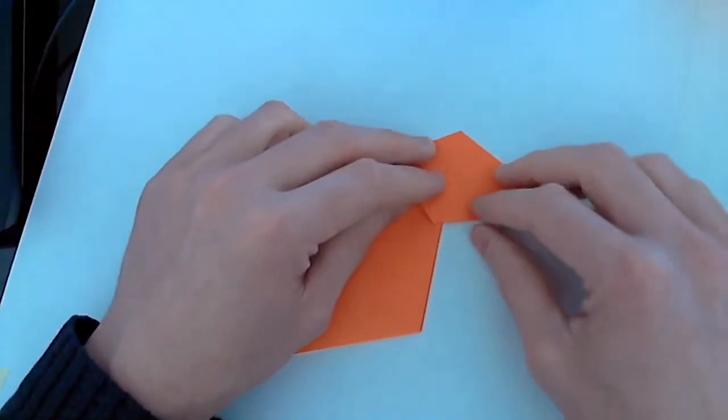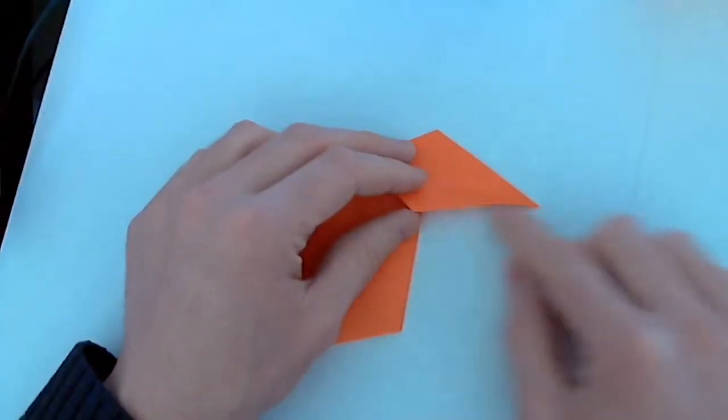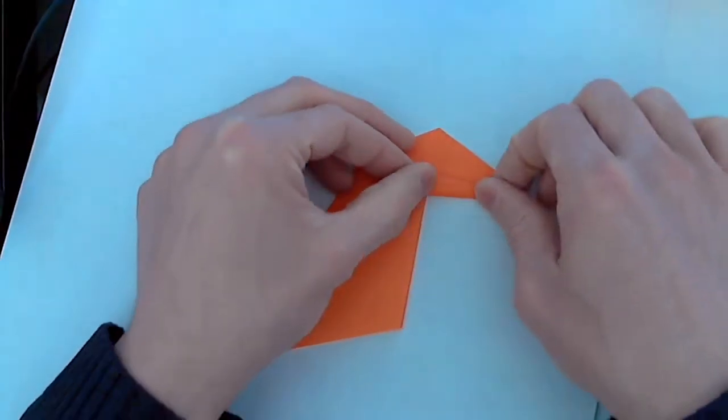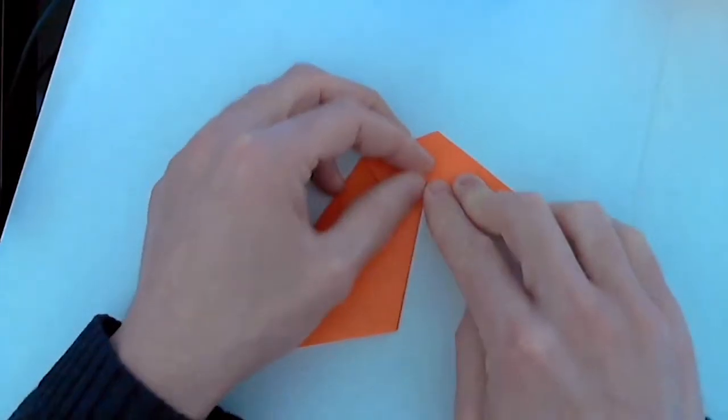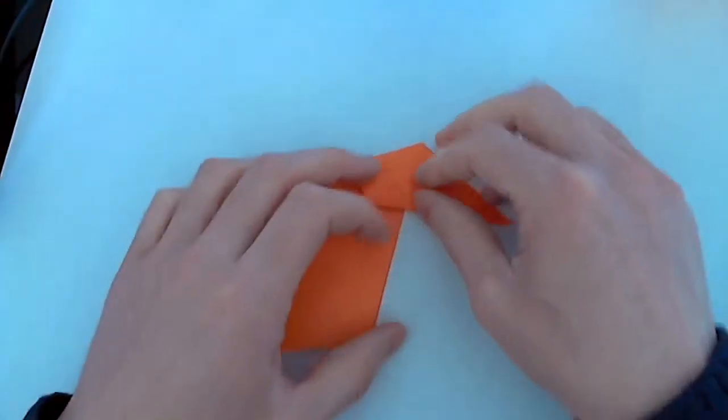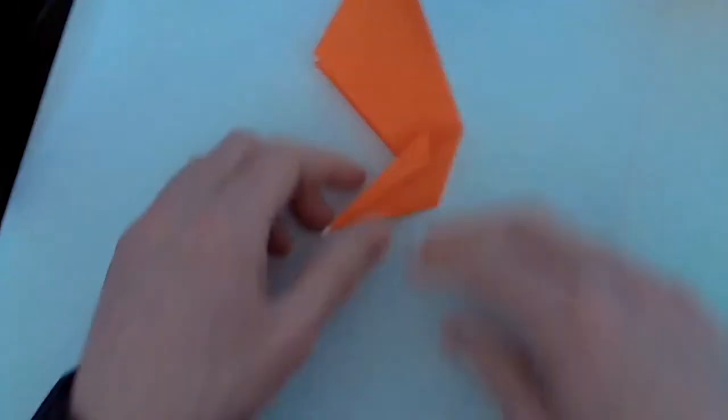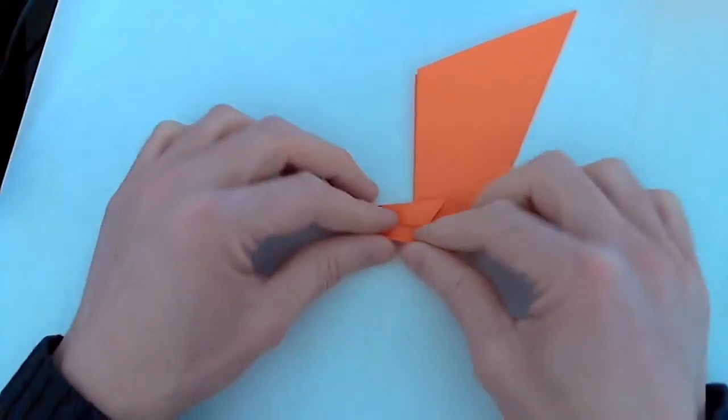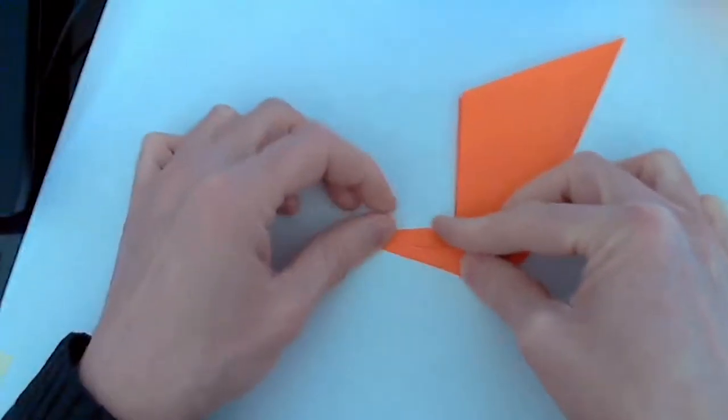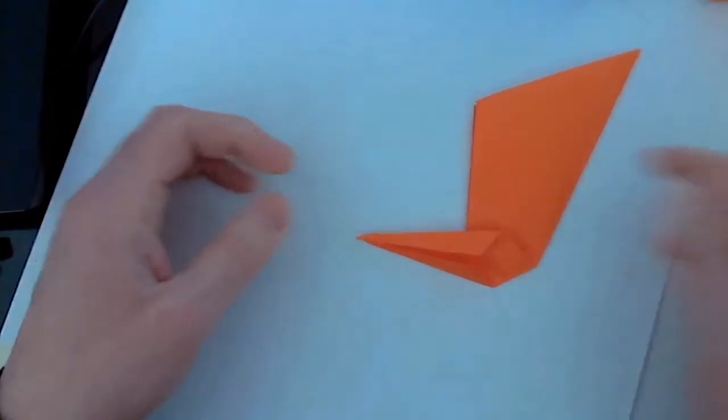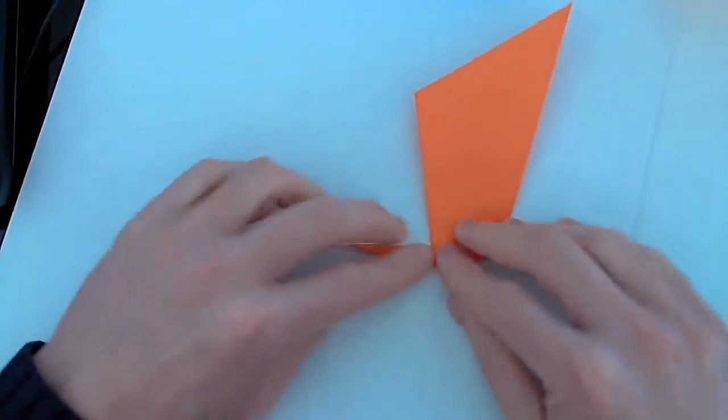Open this up and take this edge here and fold it towards the center. Open this over, rotate, and do the same thing on the other side. Now collapse everything inward.